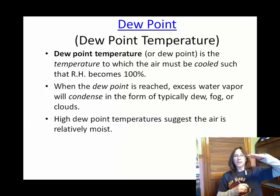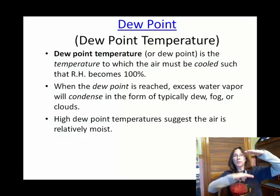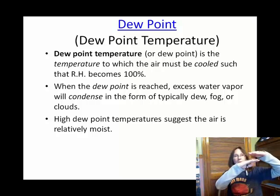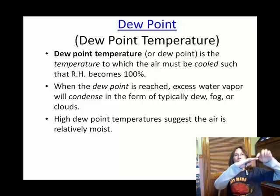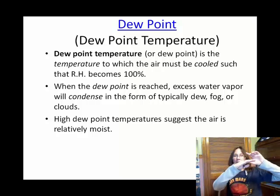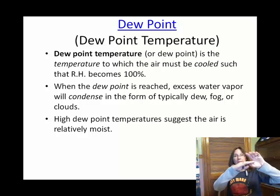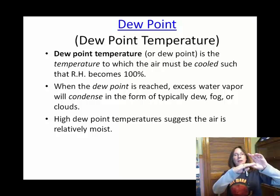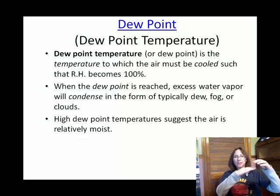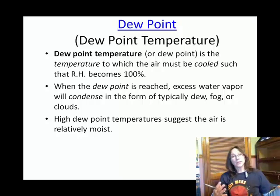If this is my current temperature and this is my dew point temperature, if your dew point temperature is relatively high, there's not much distance between the current temperature and the dew point temperature. That means you don't have to cool down very far in order to reach 100% relative humidity. So that small dew point spread between the current temperature and the dew point temperature means you might get fog over the course of the night as surface temperatures cool down. Also, if your dew point temperature is relatively high, that means your air is relatively moist.